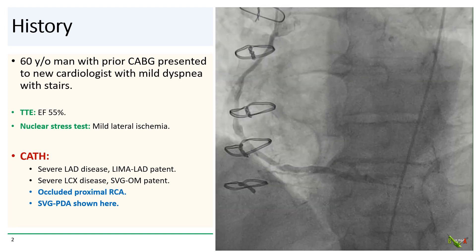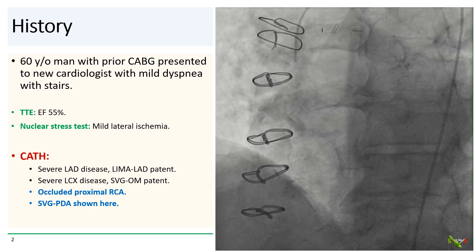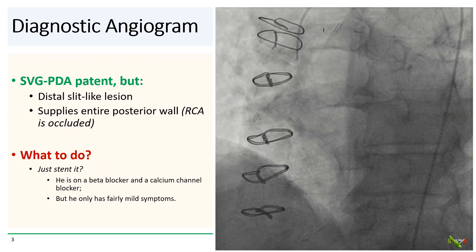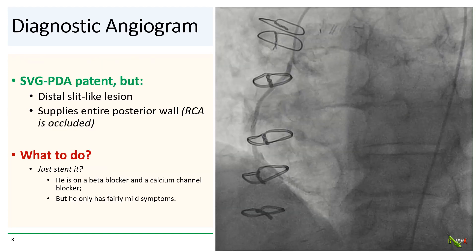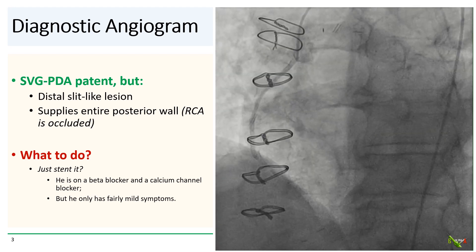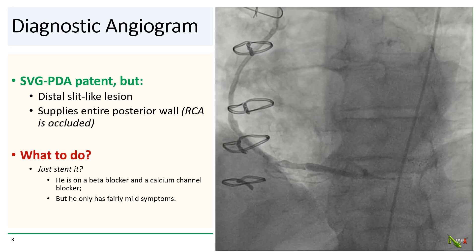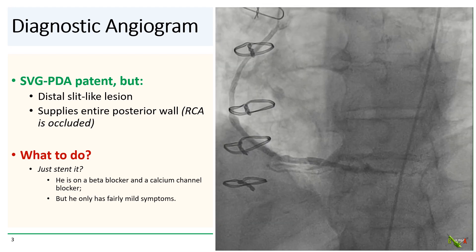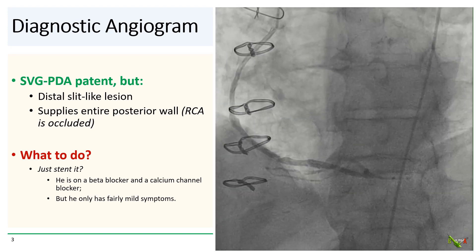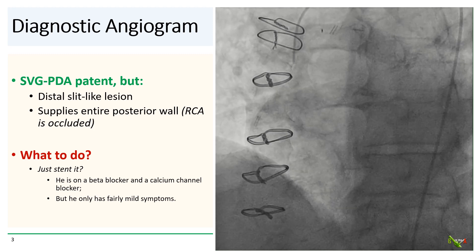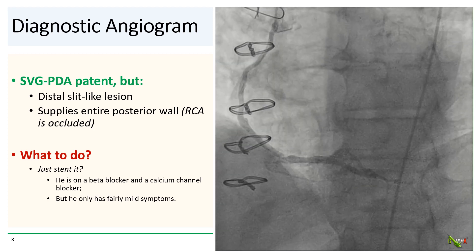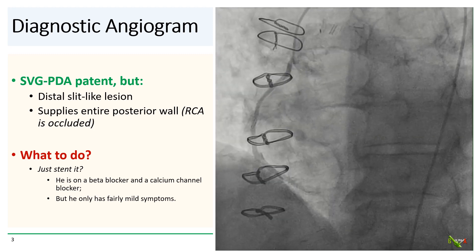There is an interesting lesion in the distal portion of the graft. What we see is a slit-like lesion in the distal portion of the graft that, angiographically at least, appears to be significant. Because the RCA is completely occluded proximally, this graft supplies the entirety of the posterior wall of the heart.